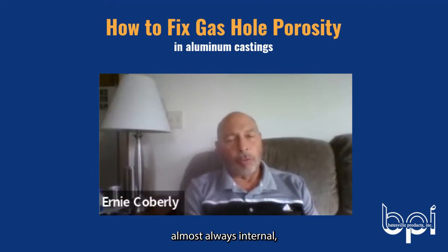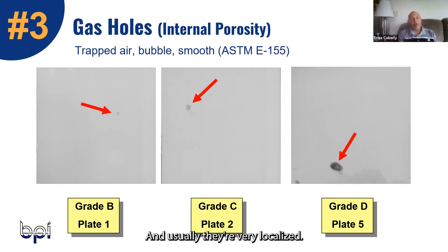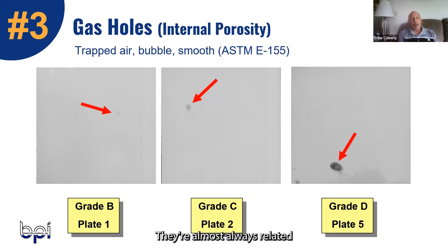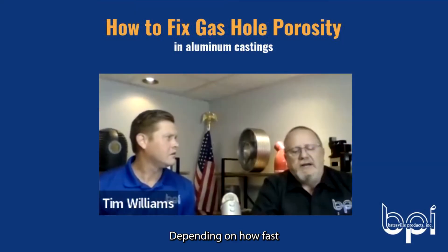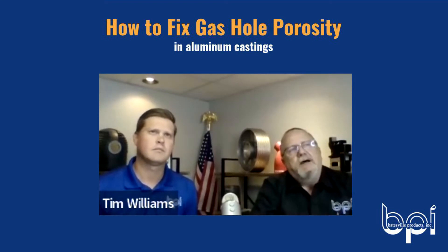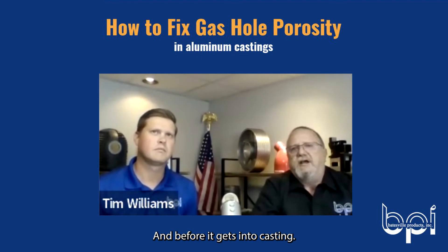Gas holes are almost always internal, almost always round in appearance, and usually very localized. They're usually based on metal turbulence — either something coming down the down sprue or something leaking in at some point in the gating system. They're almost always related to some form of metal turbulence. Depending on how fast the tilt pour is operating, it may hit bottom and cause turbulence in the bottom end before it goes into the casting.